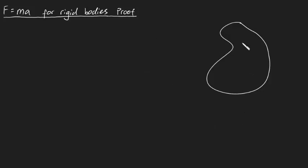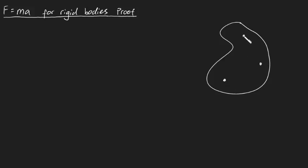Now, there could be an infinite number of particles that make up a rigid body. But I'm going to simplify this case as if there were only three particles that made up this rigid body. A little bit of a simplification, but hopefully you'll appreciate that this can be generalized to N particles, not just three.